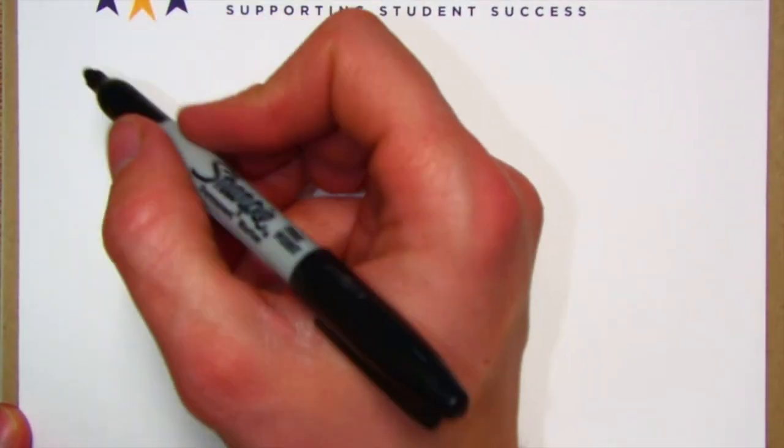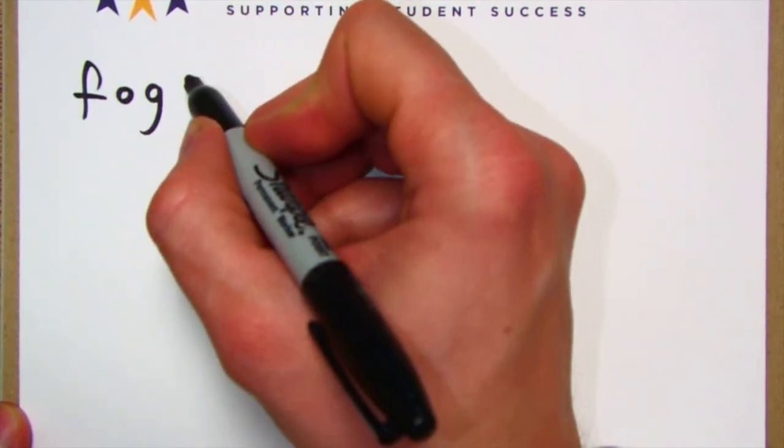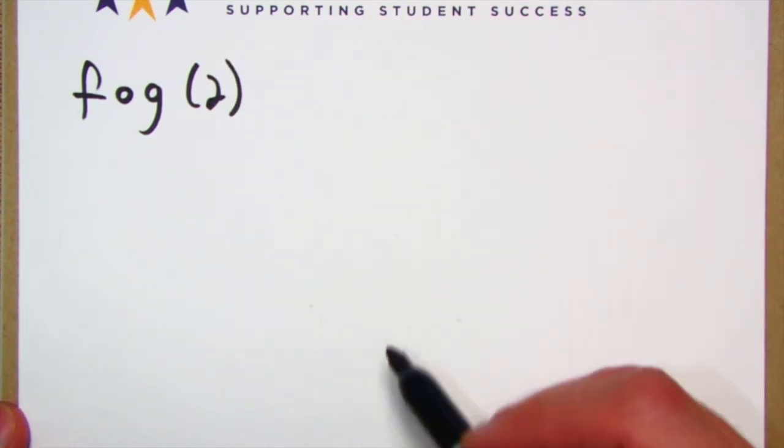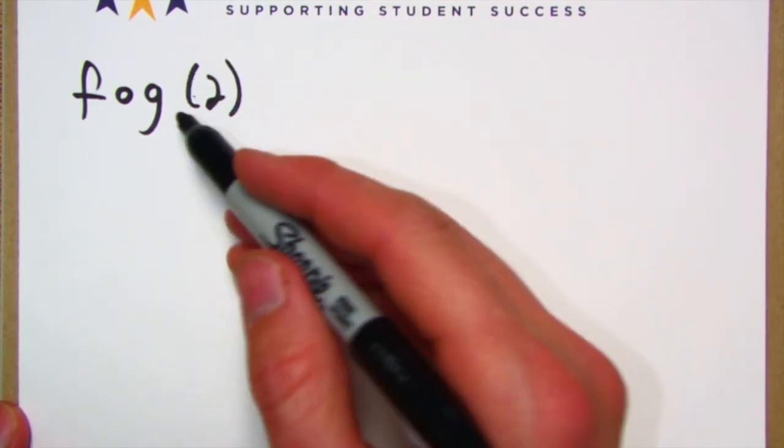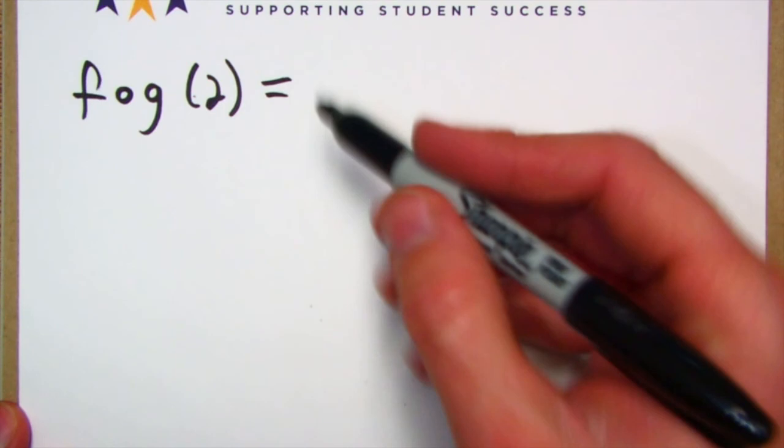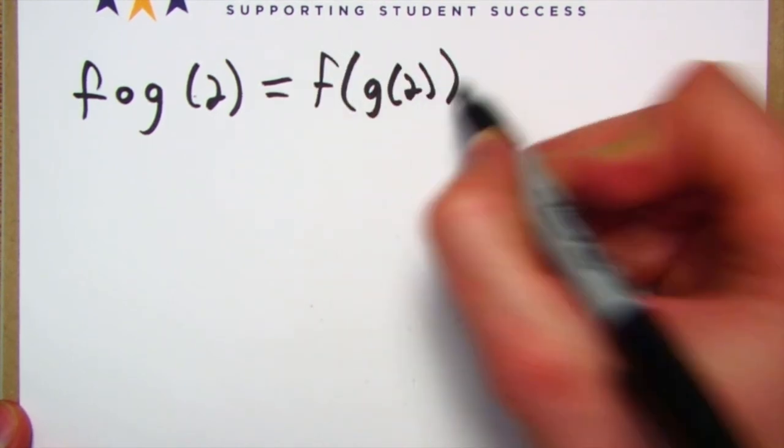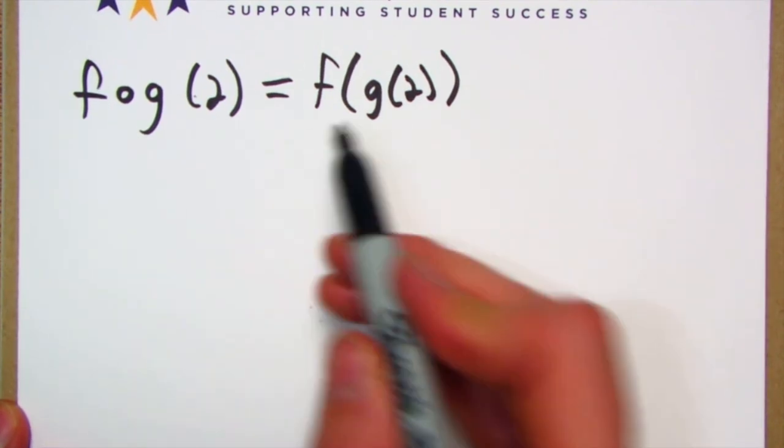All right, f circle g of whatever, we'll put a 2 in here for now. All right, this means the exact same thing as f of g of 2 written this way. These two are equivalent, same exact thing.